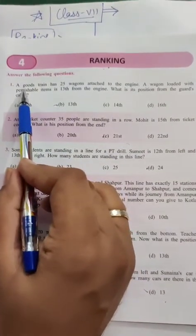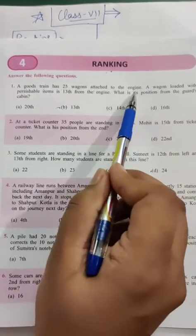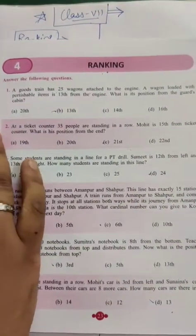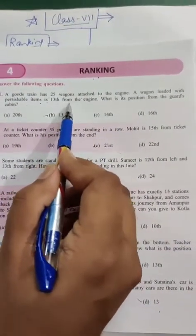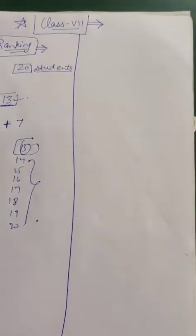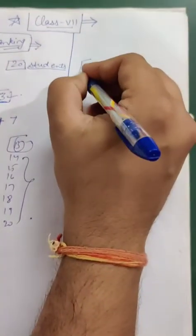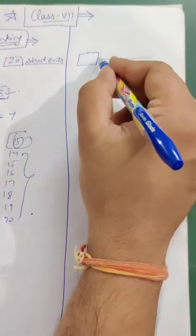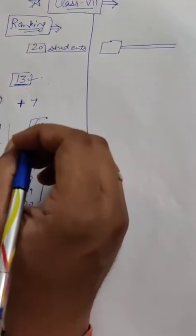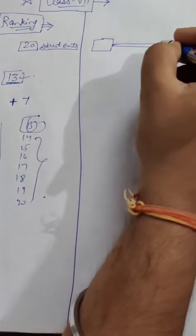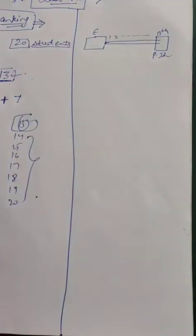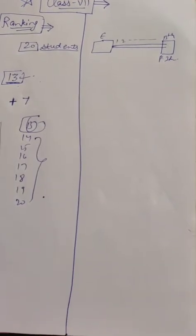Now see here some questions. What are the first questions? Look at this question. A goods train has 25 wagons attached to the engine. The goods train has 25 wagons attached to the engine. A wagon loaded with perishable items is 13th from the engine. Now what is the position from the guards cabin?